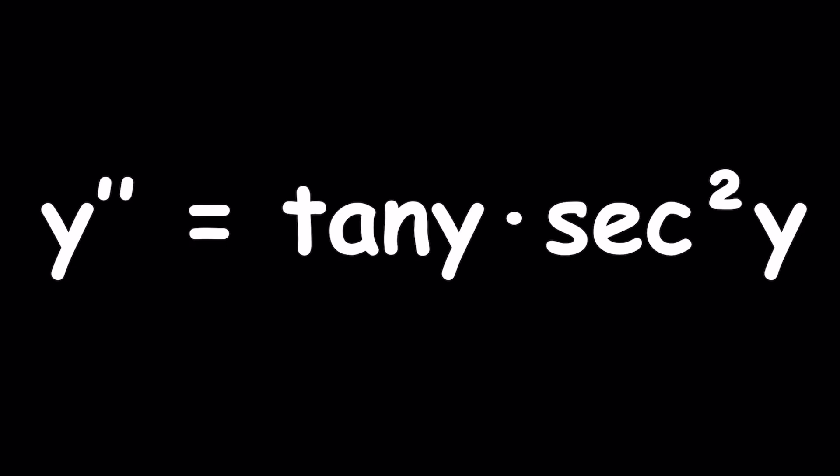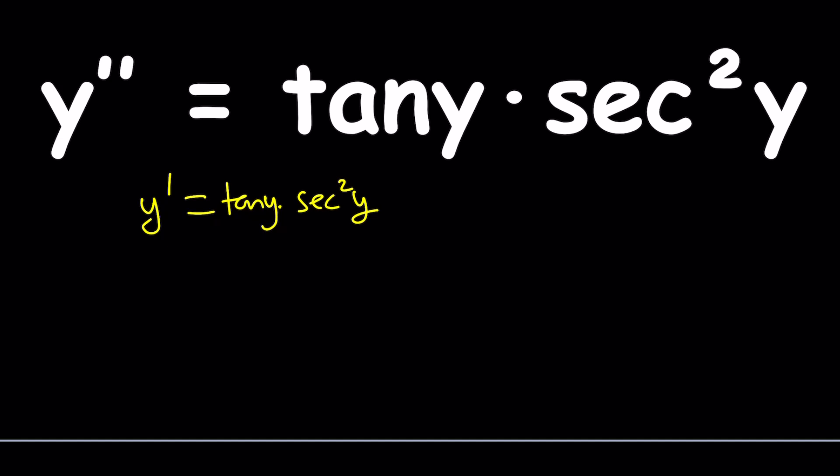This is an interesting differential equation because we have the second derivative instead of the first derivative. If we had y prime equals tangent y times secant squared y, this would be fairly easy. You could turn it to a separable differential equation by writing this as dy over dx and then putting the y's on the same side. But we have the second derivative that really makes things much more complicated.